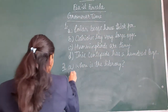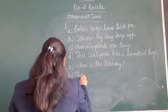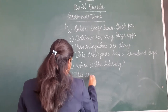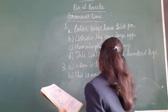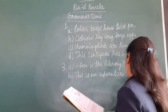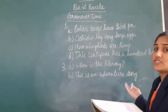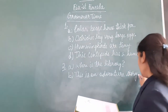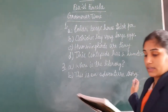Part B: 'This is an adventure story.' This is a simple statement telling us something. So we will put a full stop.